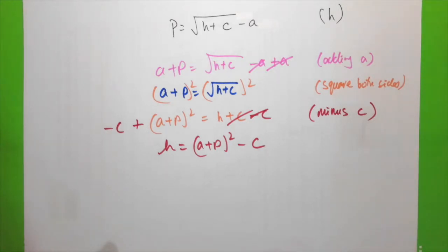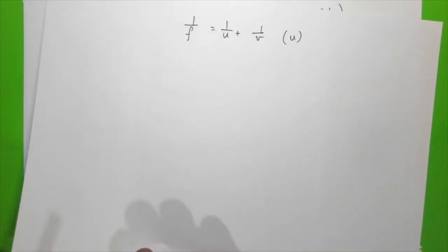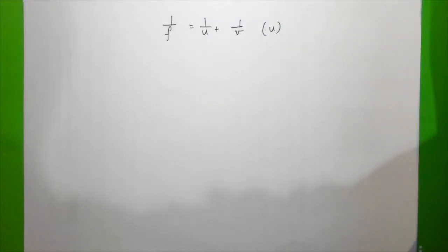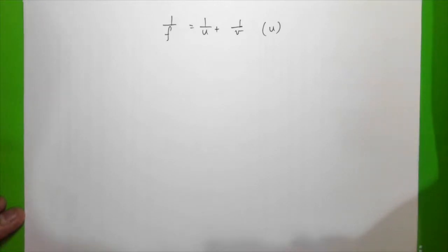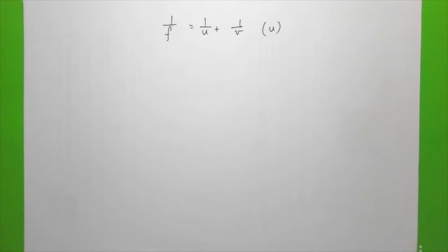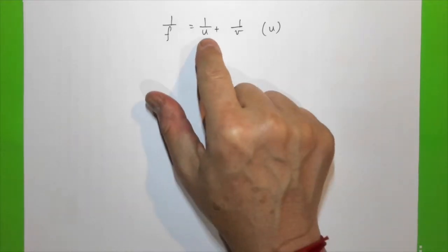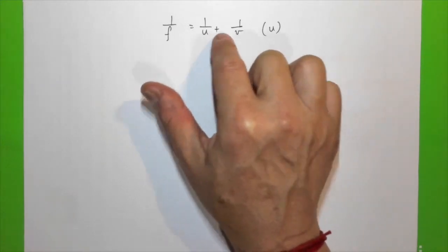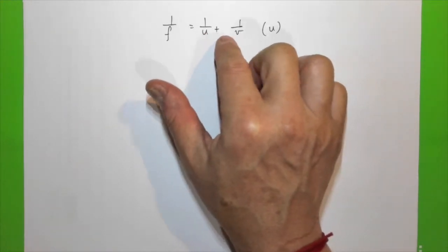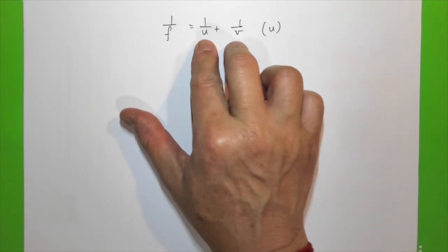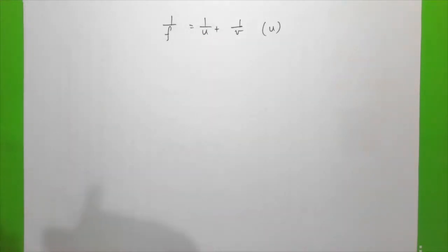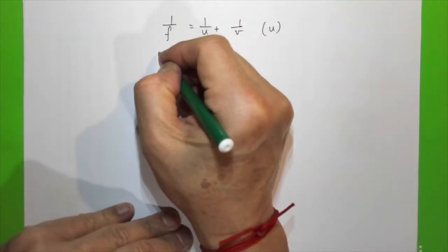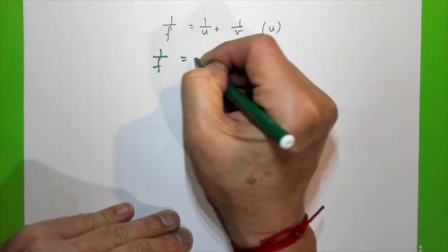Now take some time, pause the video, and try the next question. For this one, what we need to do is bring the right-hand side to a common denominator. The common denominator is uv, so the right-hand side becomes: 1/f = uv... keeping the left-hand side as 1/f equals uv.